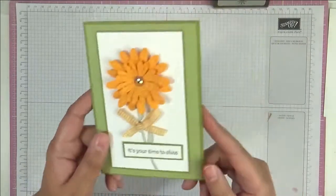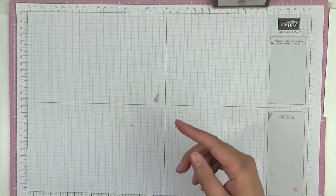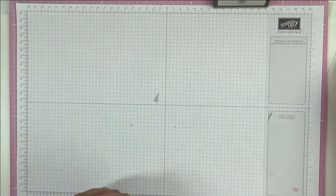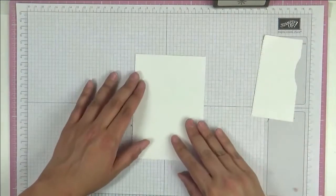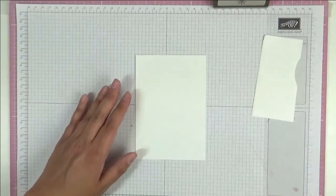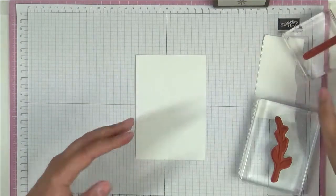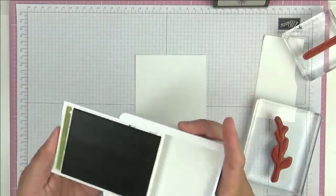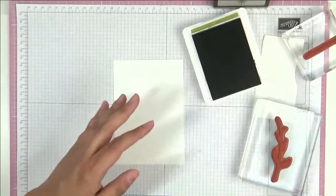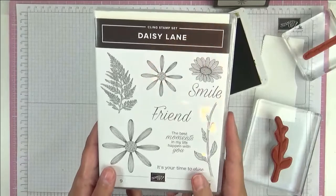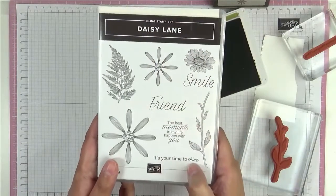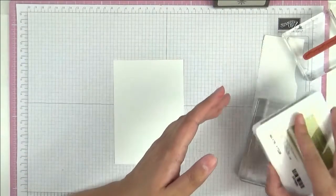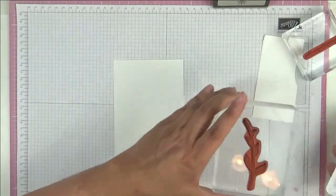So let's get started. We're going to start with the stamping and I've got here some pieces of basic white. Let me bring in my stamps and my ink pad. We're going to be using Old Olive and this is the stamp set we're going to be using - Daisy Lane. We're going to use this one that says it's your time to shine and we're going to use the stem. So let me ink up my stem.